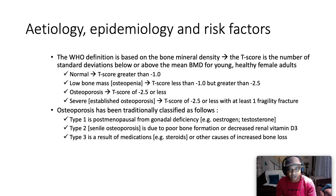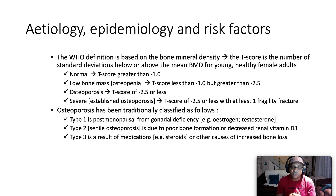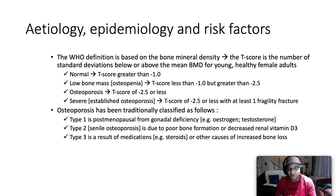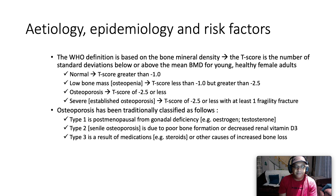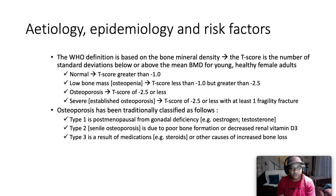Osteoporosis has been traditionally classified as Type 1, 2, and 3. Type 1 classically occurs in postmenopausal females and is attributed to gonadal deficiency — lack of estrogen or testosterone. Type 2, senile osteoporosis, is due to poor bone formation or diminished renal vitamin D3 (cholecalciferol). Type 3 results from medications like steroids taken chronically, for example for sarcoidosis, asthma, or immunosuppression.